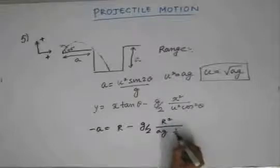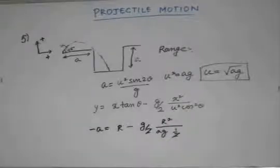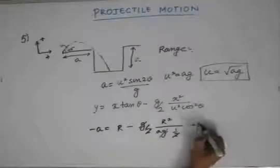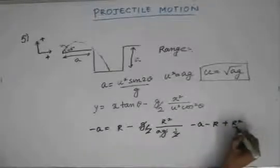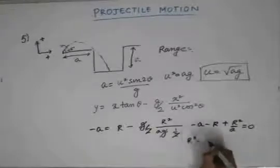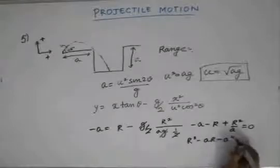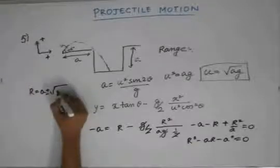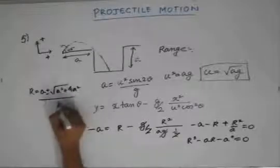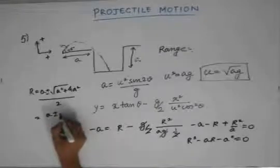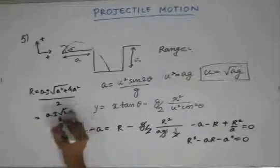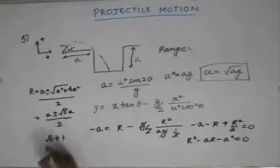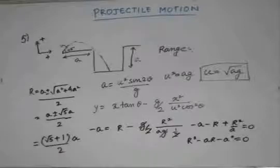With cos²45° = 1/2, substituting gives: −a = r − r²/a, which simplifies to r² − ar − a² = 0. Solving this quadratic: r = a(1 ± √5) / 2. Taking the positive root, the range is r = a(1 + √5)/2, which is approximately √5 times a. This is the range of the particle.